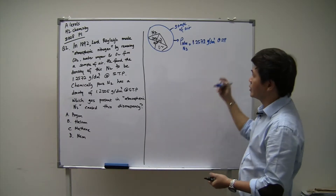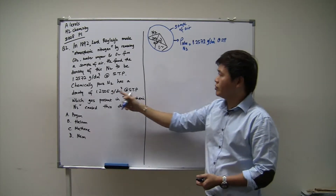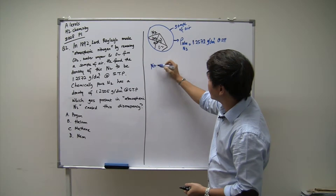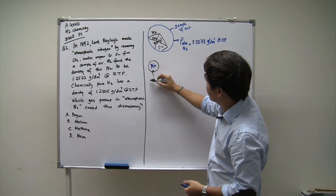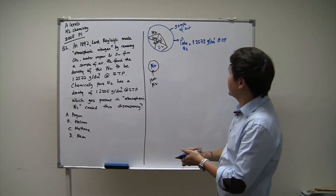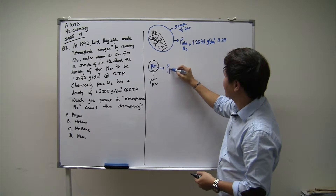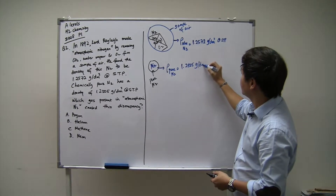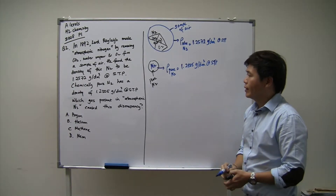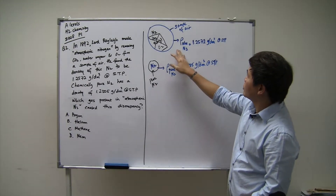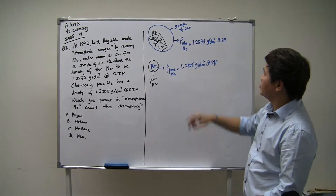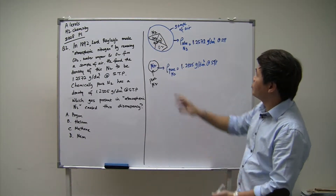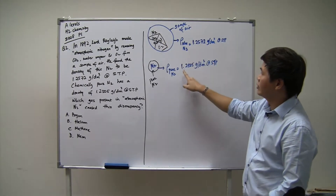STP stands for Standard Temperature and Pressure. He found that this density is different from the density of real pure nitrogen. If you have real pure nitrogen, the density is found to be 1.2505 grams per dm³, again at STP. You notice that pure nitrogen and the atmospheric nitrogen have a difference in density, telling you that something else must be found inside — he managed to remove most of the impurities, except there's one underlying impurity still present, and that makes the difference between his atmospheric nitrogen and really pure nitrogen.